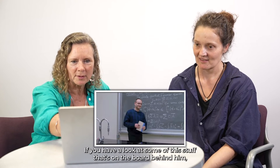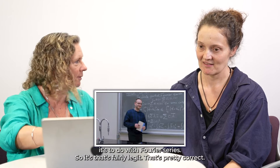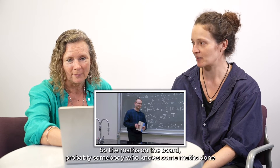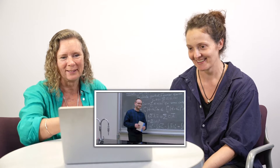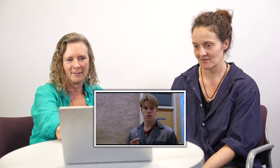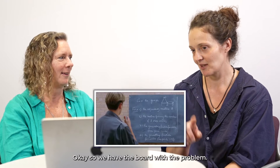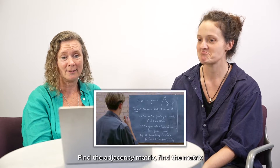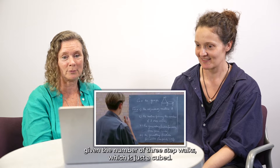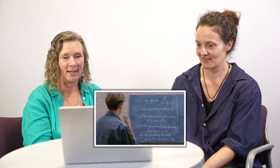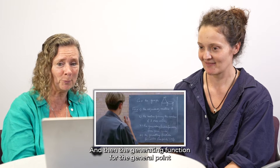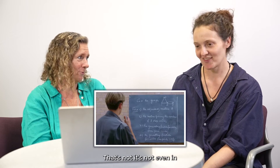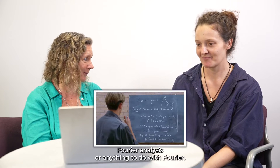If you have a look at some of the stuff that's on the board behind him, it's to do with Fourier series — that's fairly legit, that's pretty correct. I have no idea — the math on the board is probably from somebody who knows some math. So we have the board of the problem. It's given a graph: find the adjacency matrix, find the matrix given the number of three-step walks which is just A cubed, and then the generating function for the general point i to j and from one to three. That's not a Fourier system — it's not even in Fourier analysis or anything to do with Fourier. It's graph theory.